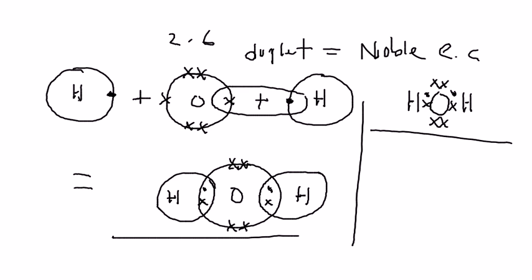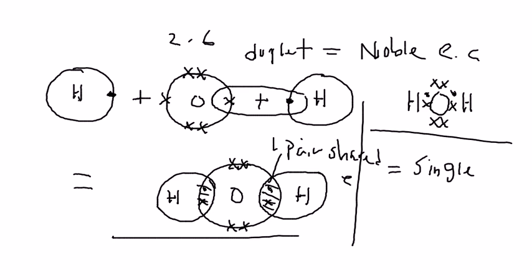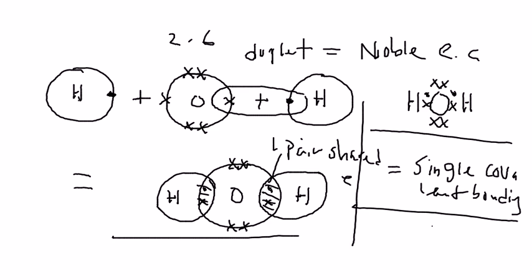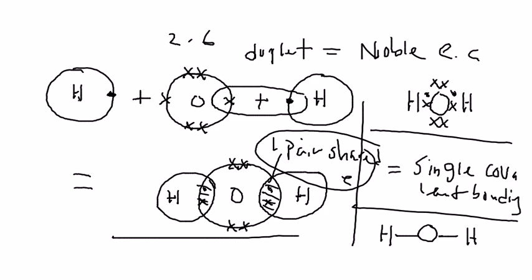As you can see, there are two single bonds — two sharings of electrons — one pair of electrons on each side. This means you form a single covalent bond. In the structural formula, you write one oxygen atom connected by one line to one hydrogen and one line to another hydrogen. One line represents one pair of shared electrons, which is a single covalent bond. That's all for this lesson.